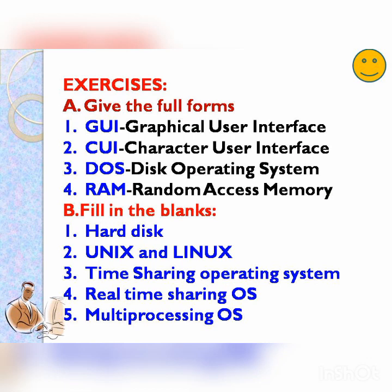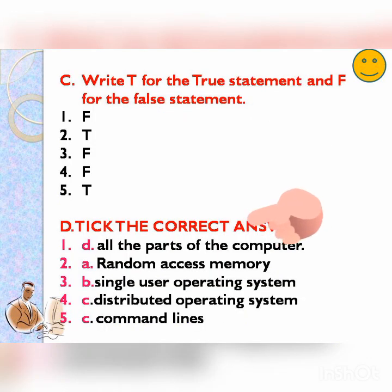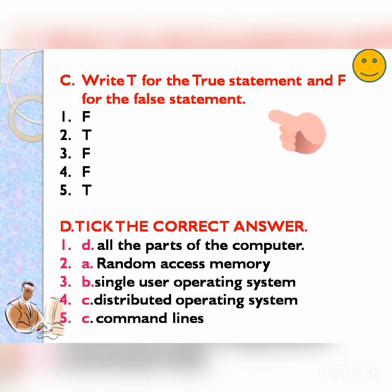Then fill in the blanks — questions you see from the book, and then write the answers. Then number C: write D for the true statement and F for the false statement. Then number D: tick the correct answer and write the option, then the answer.